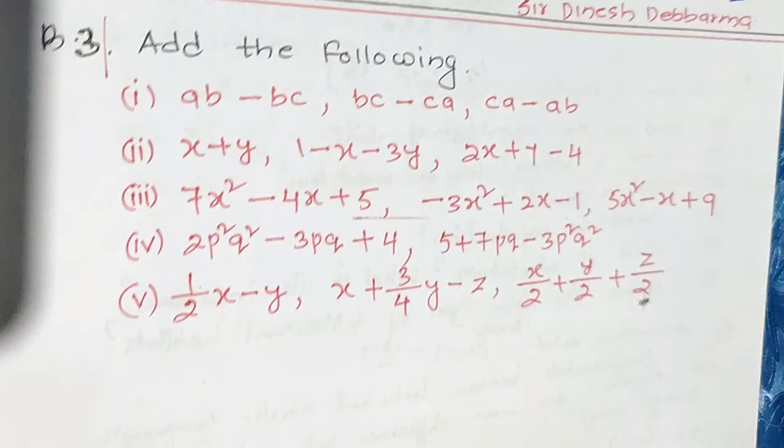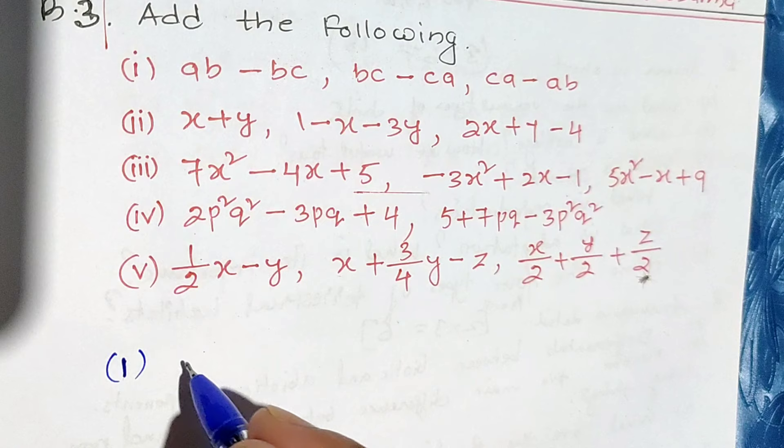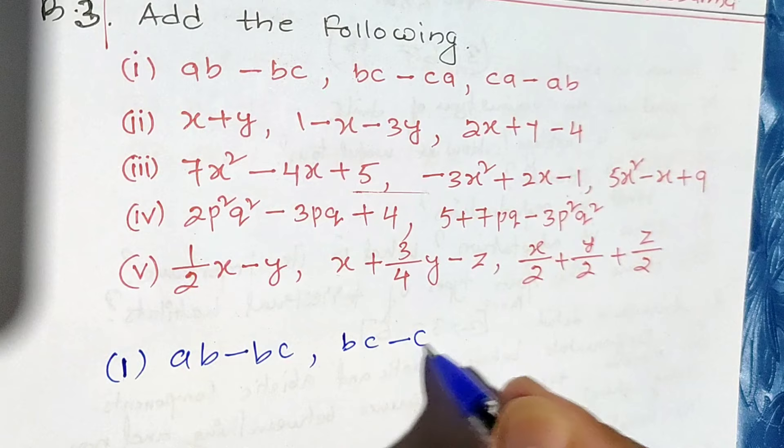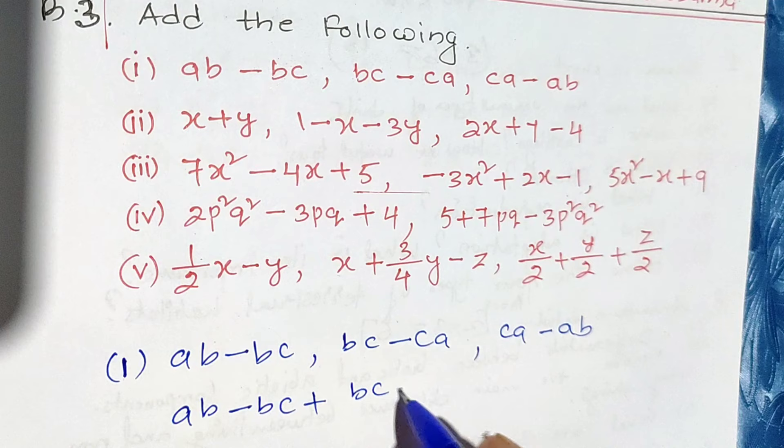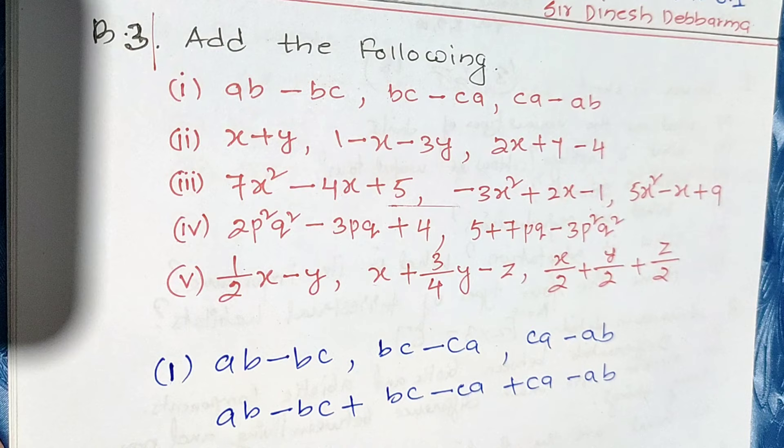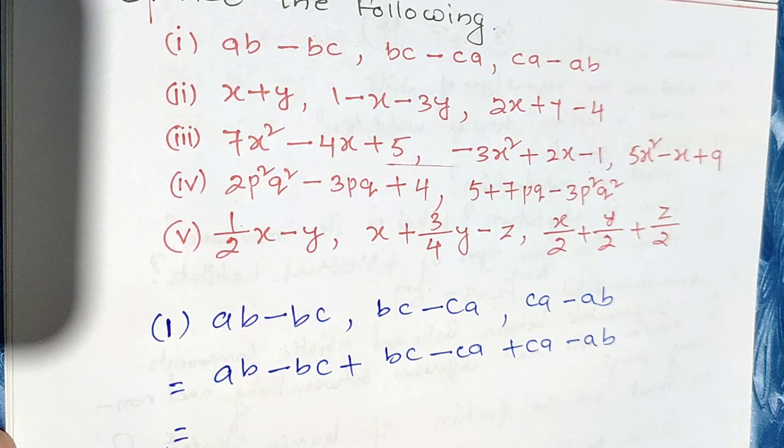Now, question number one: ab minus bc, bc minus ca, ca minus ab. We need to group into like terms — collecting the like terms, in other words.